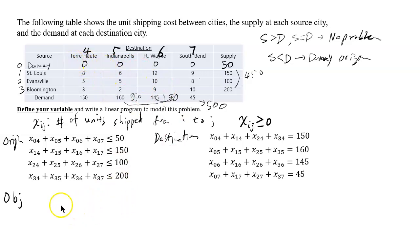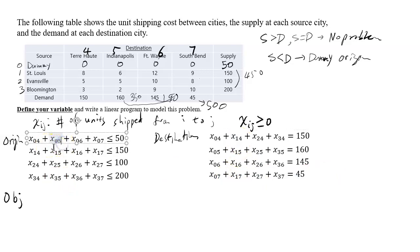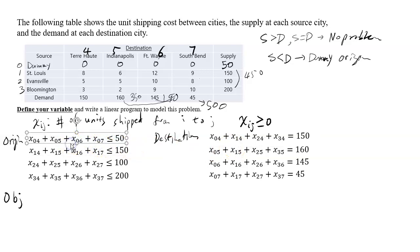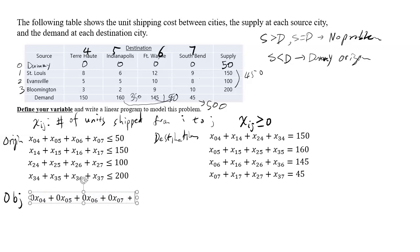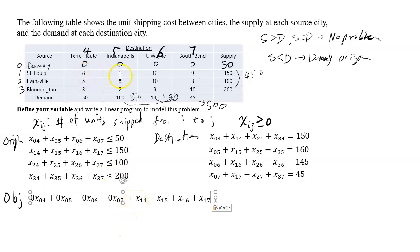Writing 0 in front of the dummy variables makes sure that people who read your work see that these are dummy variables. So X04, X05, X06, X07 are all dummy variables with 0 as their coefficient. Then we add the St. Louis terms with coefficients 8, 6, 12, 9 — so that's 8·X14 + 6·X15 + 12·X16 + 9·X17.